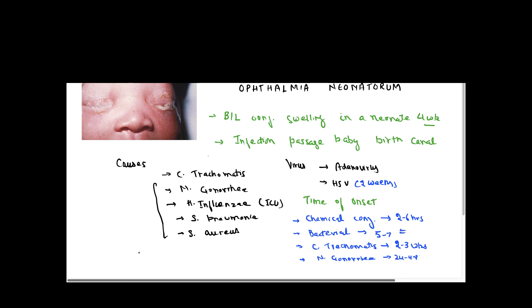For treatment, the most important approach is to treat according to culture sensitivity results and start antibiotics accordingly. If there is a definitive infection in the birth canal, povidone-iodine solution can be applied to the eye as an antiseptic. Otherwise, treatment is based upon the causative agent.